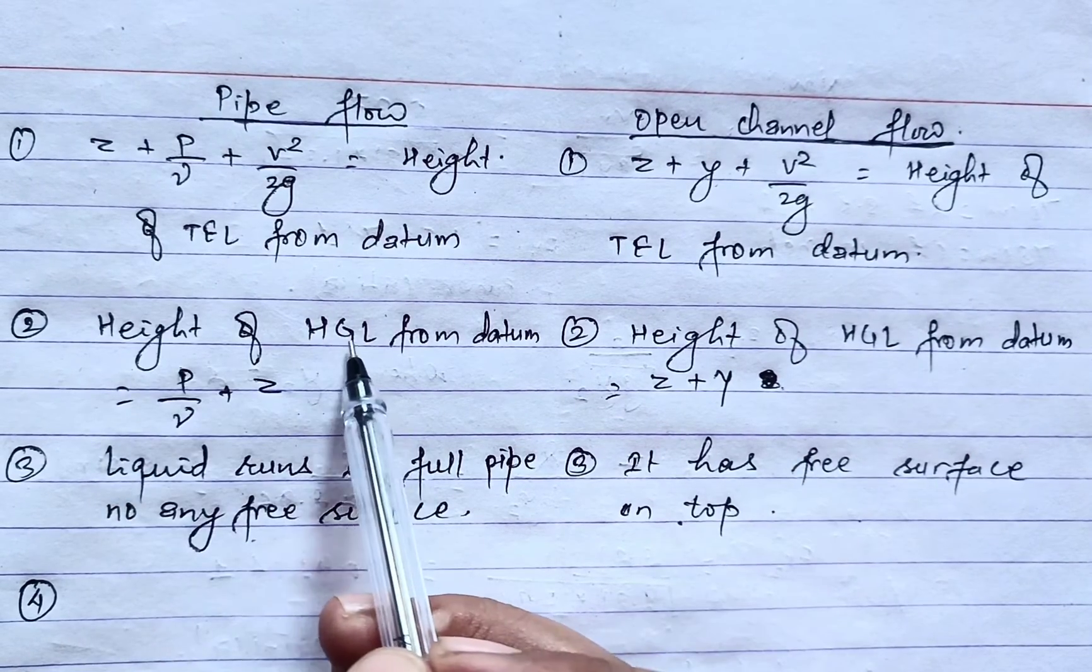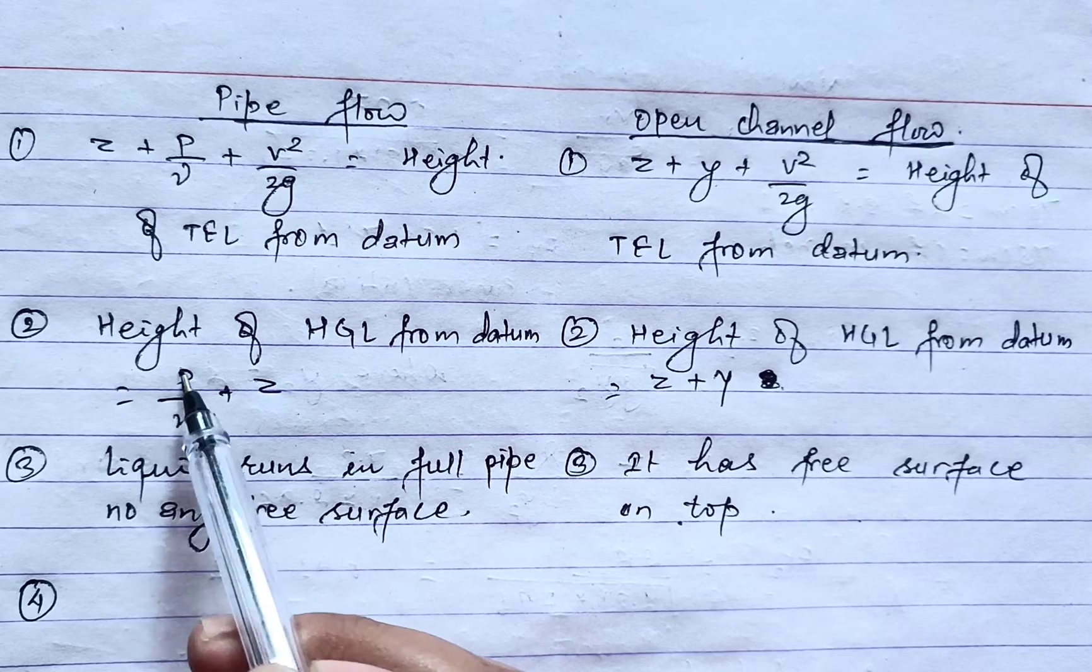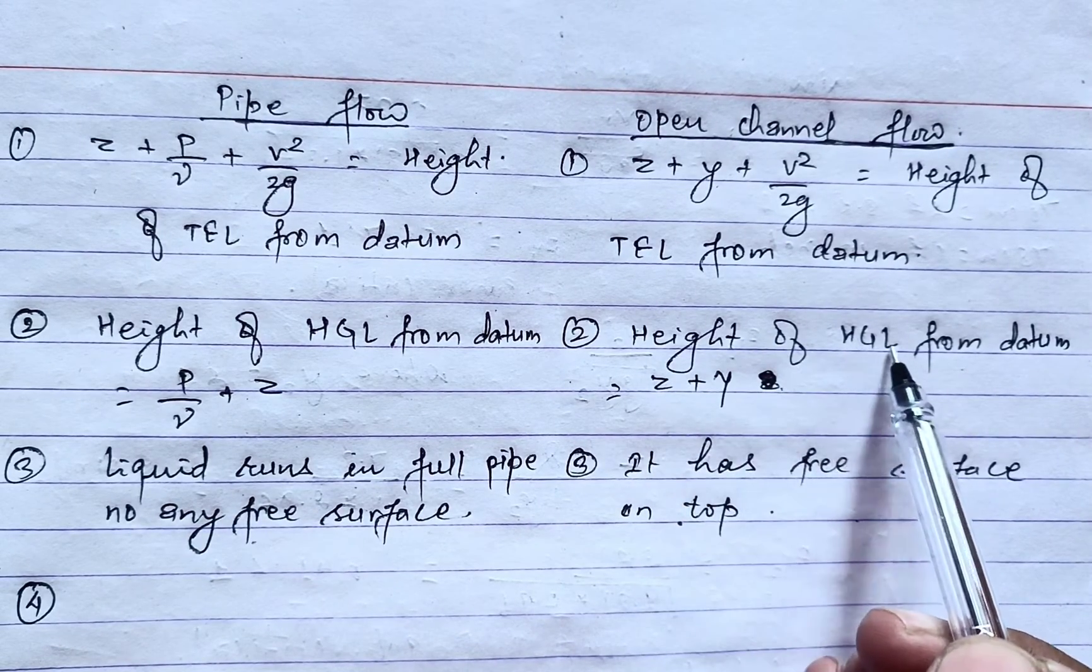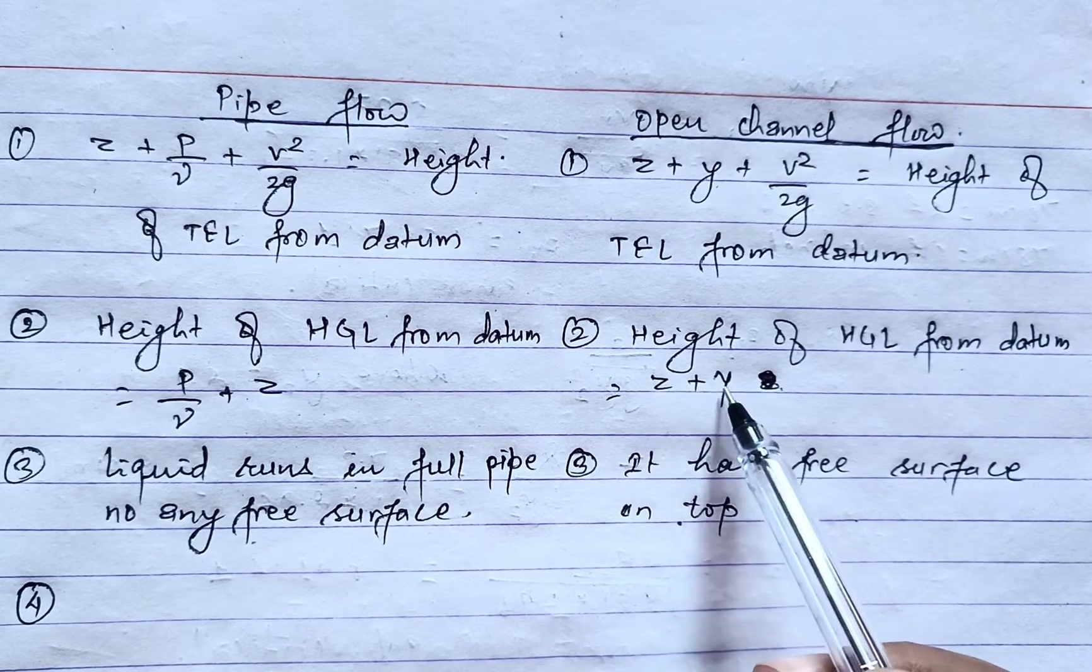In pipe flow, height of hydraulic gradient line from datum is given by p by gamma plus z, whereas in open channel flow height of hydraulic gradient line from datum is given by z plus y.